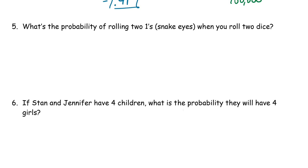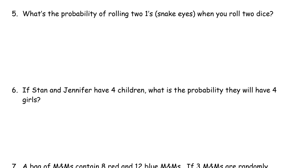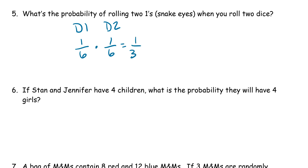Now the last three are a review of some basic probability. Number 5: what's the probability of rolling two ones — snake eyes — when you roll two dice? For die one, the probability of rolling a one is 1 out of 6. For die two, it's the same — 1 out of 6. We multiply them together because we want both to happen, so that's 1 out of 36, or approximately 0.03.